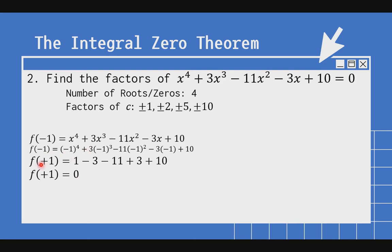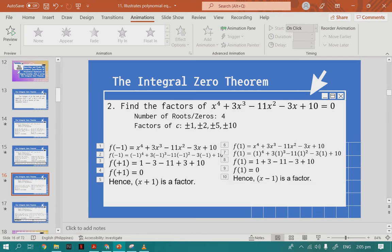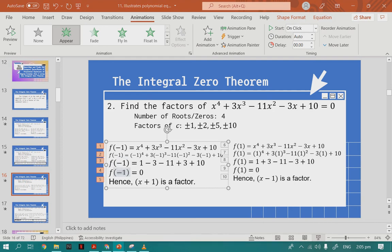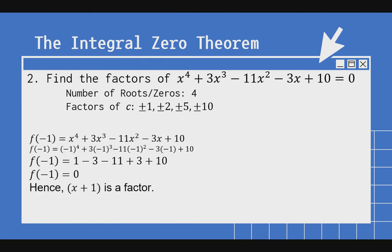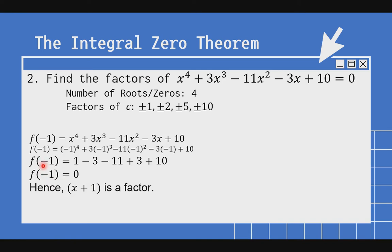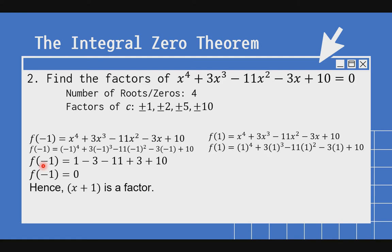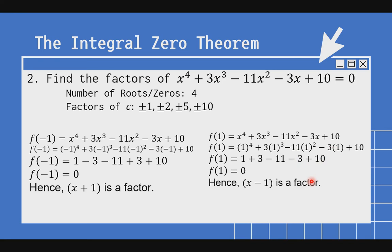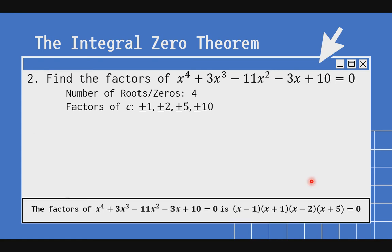Kapag pinagsama natin, 0 ang makukuha natin. Dahil nag-0 ang negative 1, ibig sabihin ang x plus 1 ay factor — factor ang x plus 1 kasi ang negative 1 ay nag-equal sa 0. Paano naman kapag positive 1? Substitute lang natin: 1 raised to 4 is 1. 1 raised to 3 times 3 is 3. 1 raised to 2 times negative 11 is negative 11. Negative 3 times 1 is negative 3, then plus 10. Pag pinagsama natin, magiging equal sa 0. Hence, x minus 1 ay isang factor din.